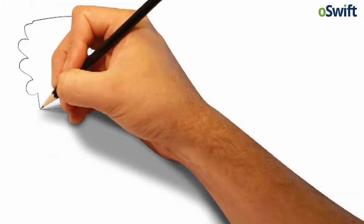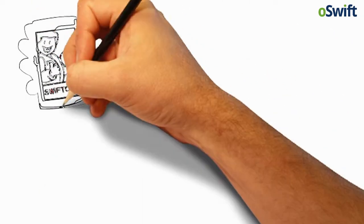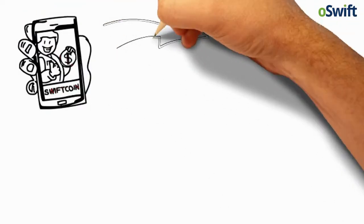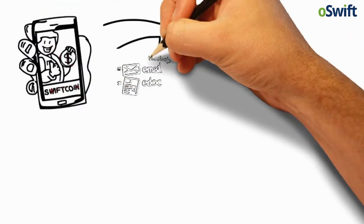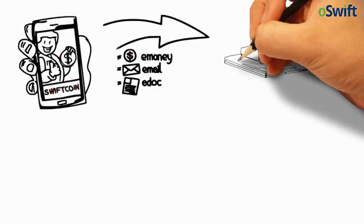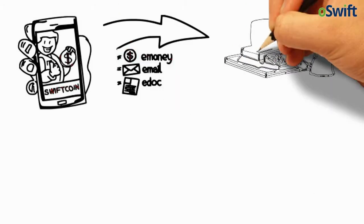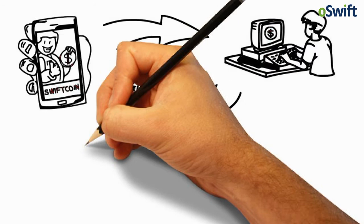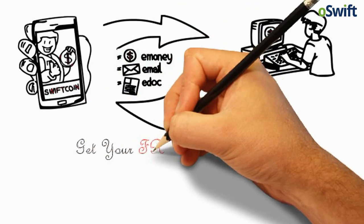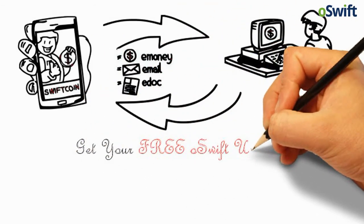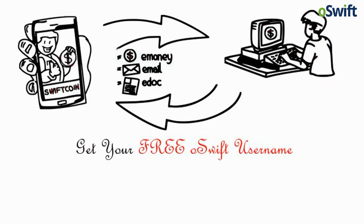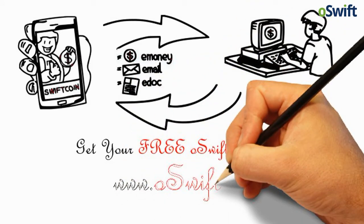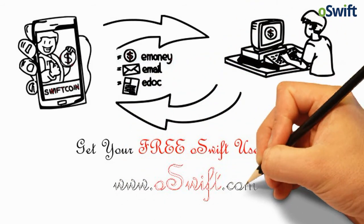What is SWIFT Coin? SWIFT Coin is electronic money that inhabits your computer just as email and word documents do. You can send SWIFT Coin to anybody just as quickly and easily as you would send email and word document attachments. Just get your free OSWIFT username at www.oswift.com and you can start using OSWIFT right now.